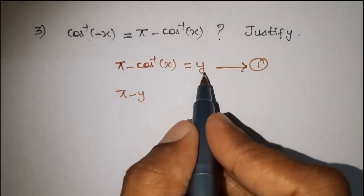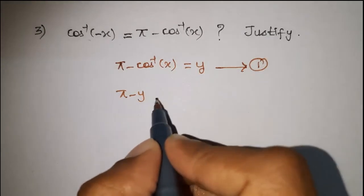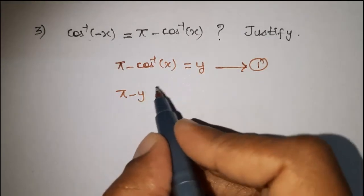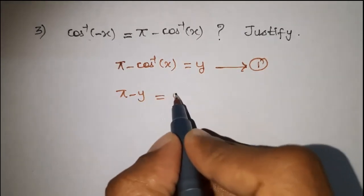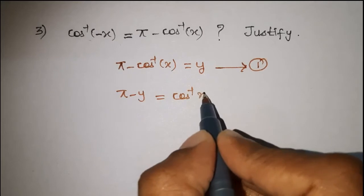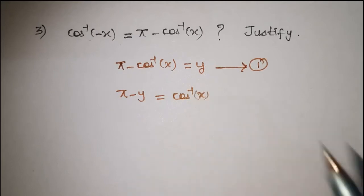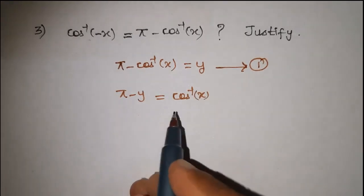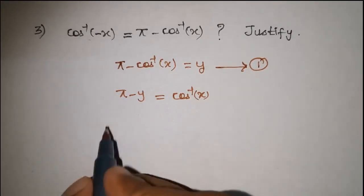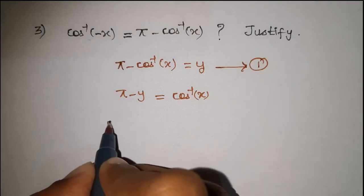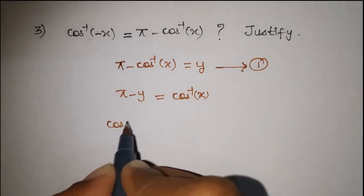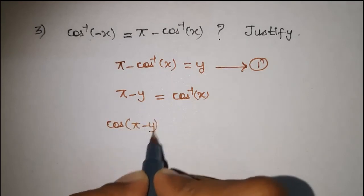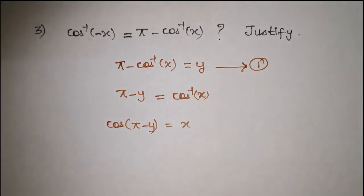Y is positive, so we bring it to the left hand side, giving minus y. Which is equal to minus cos inverse x. Bringing cos inverse x to the left hand side — cos of pi minus y is equal to x.